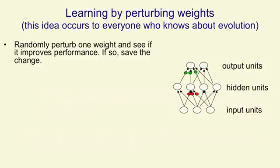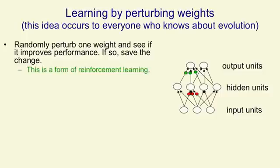The thing that occurs to everybody who knows about evolution is to learn by perturbing the weights. You randomly perturb one weight — that's meant to be like a mutation — and you see if it improves performance. If it improves the performance of the net, you save that change in the weight. You can think of this as a form of reinforcement learning: your action consists of making a small change, you check whether that pays off, and if it does, you decide to perform that action.